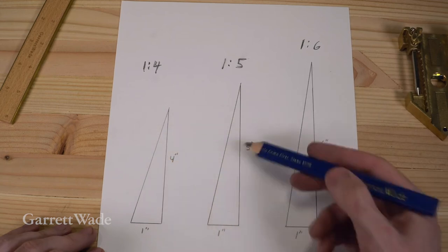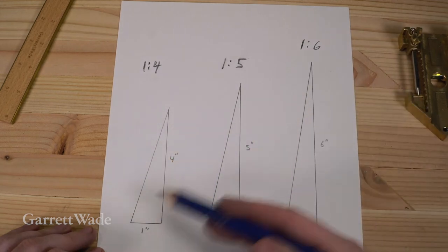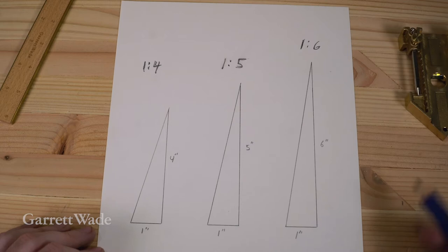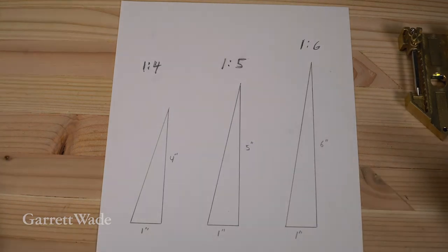So you got one to four, one to five, one to six. You can see how that changes the angle. In reality, you can cut your dovetail to whatever angle you want, whatever you think looks good.